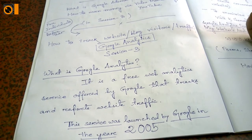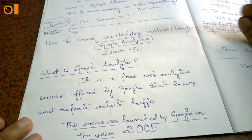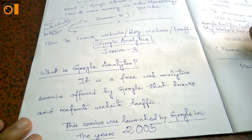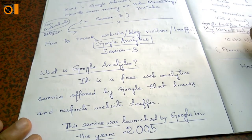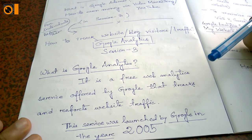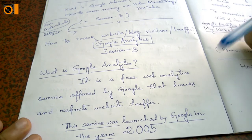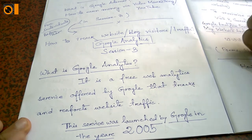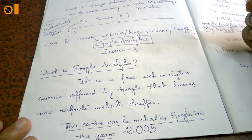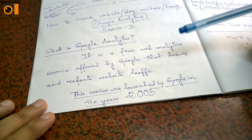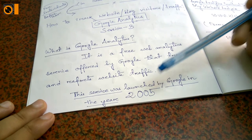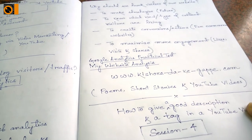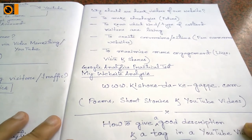First, let us know the definition of Google Analytics. What is Google Analytics? It is a free web analytics service offered by Google that tracks and reports website traffic. It is an online software which tracks visitors coming onto your website or blog. This service was launched by Google in the year 2005. Now we have to learn why we should track visitors of our website.